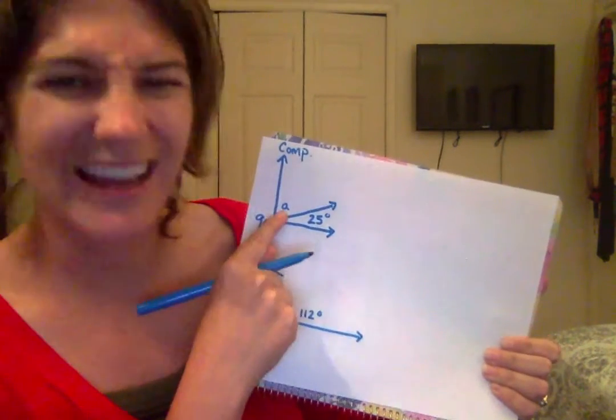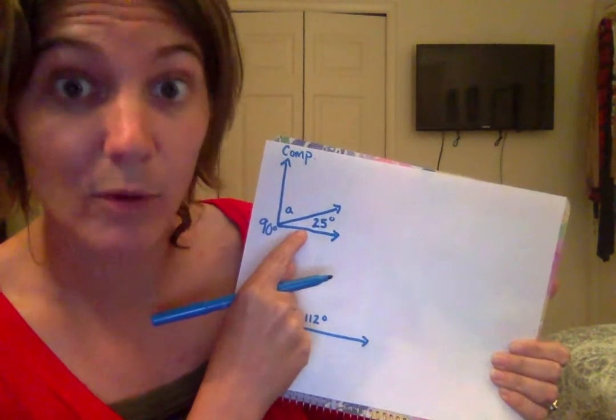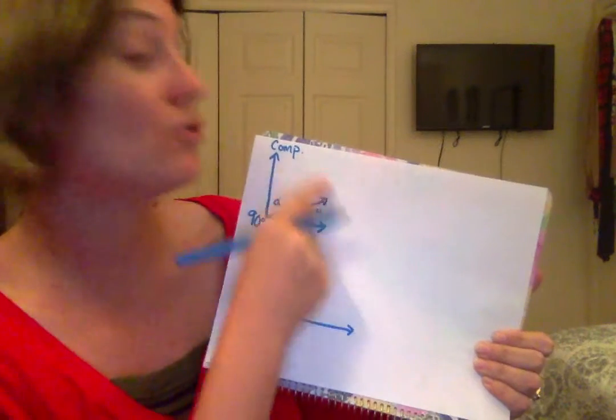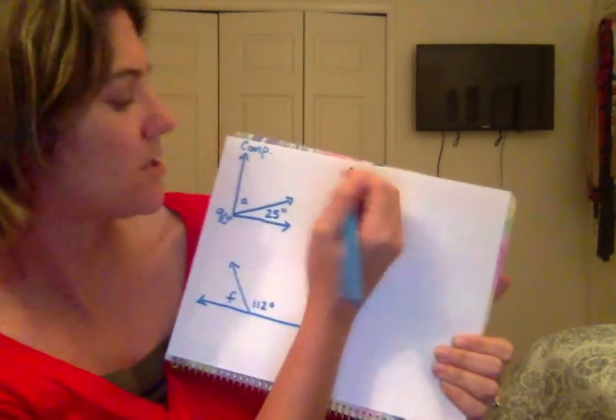So, I don't know what angle A is. I do know what the next angle is, 25 degrees. And I do know that the entire angle is 90.